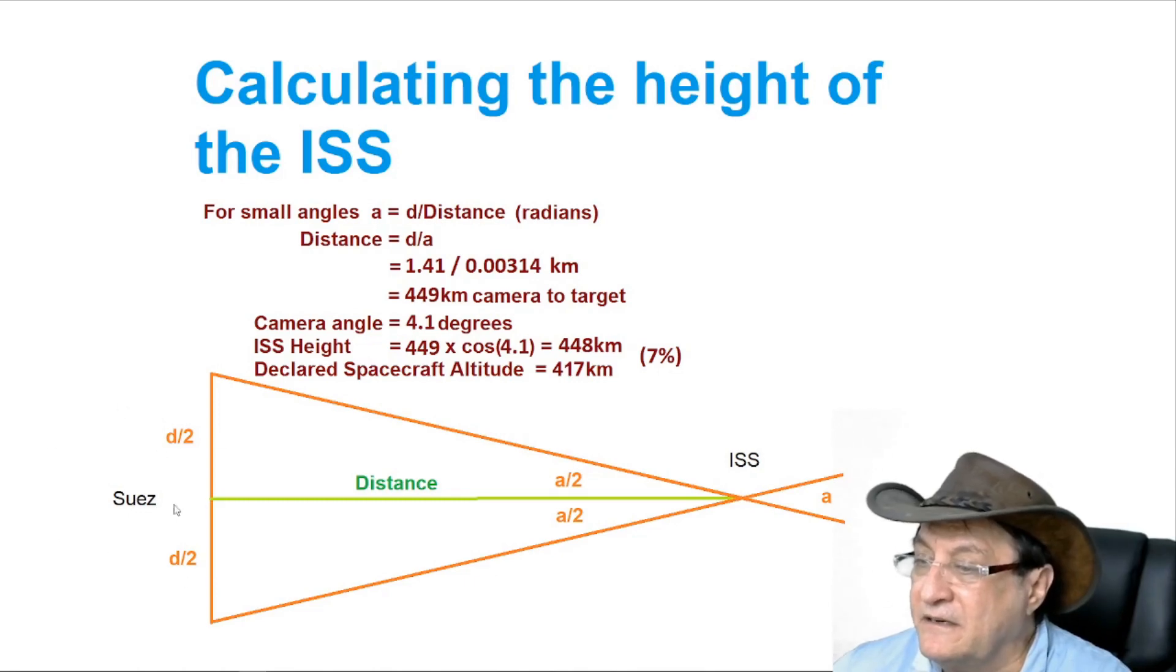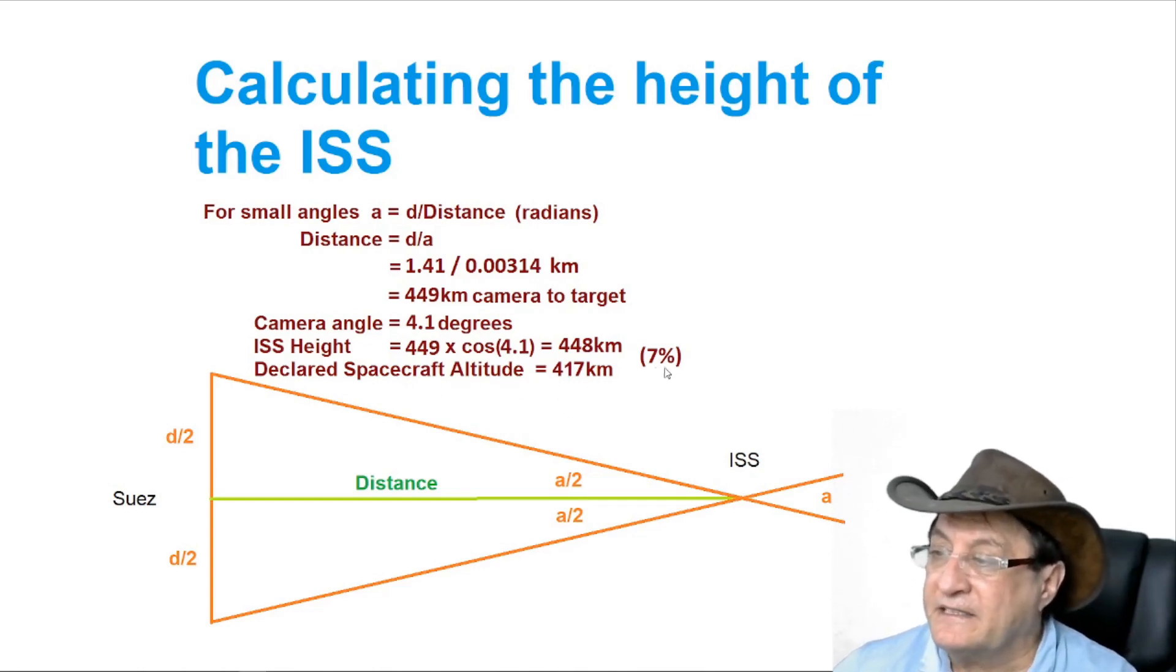Now we can calculate the height of the ISS. This ground and the Suez Canal is the left hand side here and the ISS on the right where the camera is. Now when the angles are very small like this 0.00314 we can use the small angle approximation, and that the distance is just d over a. So we know d 1.41 and the angle is 0.00314 radians, so that gives us a 449 kilometer distance from the camera to the target. Now the camera angle, because the ISS is 32 kilometers away horizontally, the camera angle is 4.1, so that gives us an ISS height of 448 kilometers. The declared spacecraft altitude is 417 kilometers, and that's about a seven percent difference, not too bad considering this kind of measurement can be up to about 10 percent different. But it gives you the right ballpark figure, you know that it's not 20 kilometers up, it's 400.